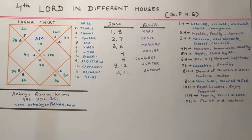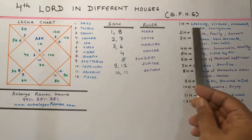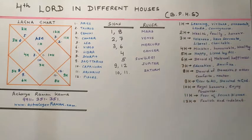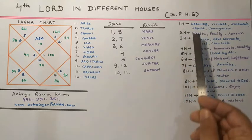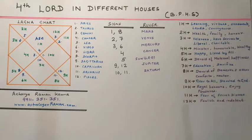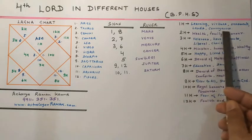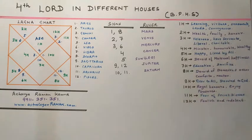If the lord of the 4th house is in the first house, the native will be endowed with learning, virtues, ornaments, lands, conveyances, and material happiness.